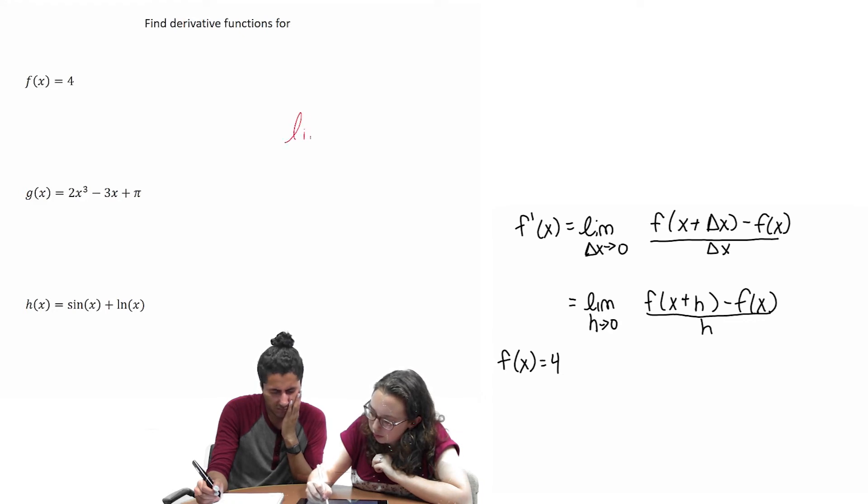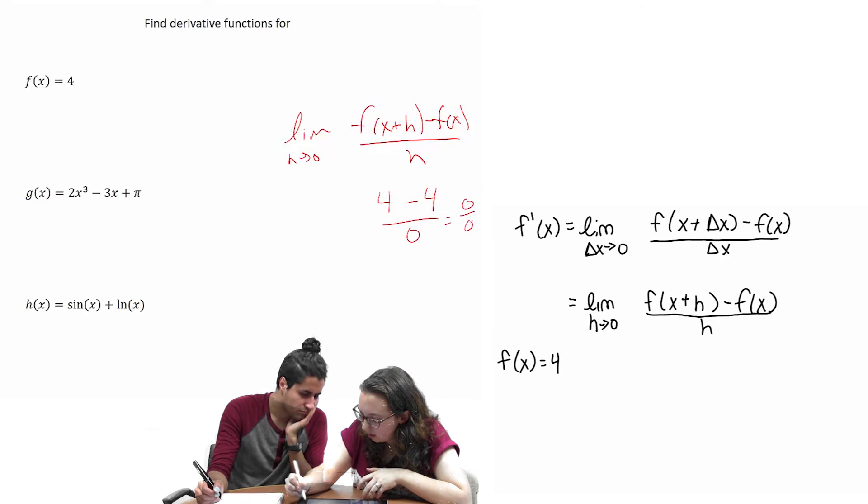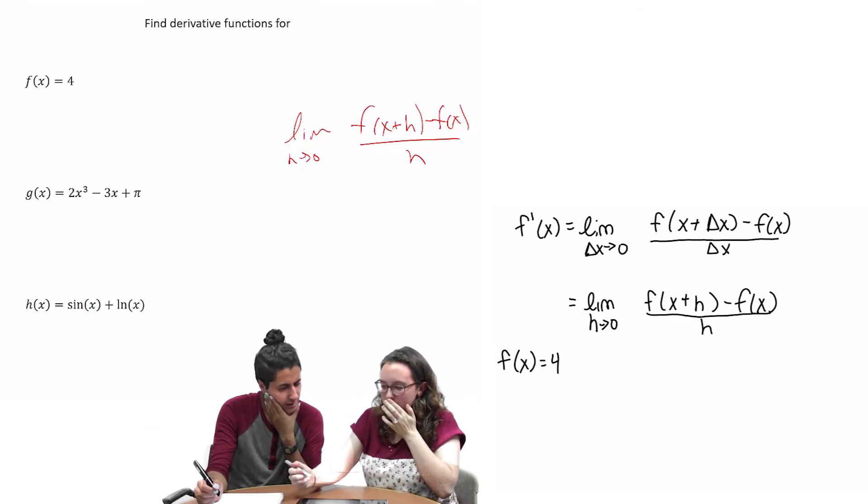So, if we do limit h versus 0... If we acted as if h is going towards 0, we'd end up getting something like that. And we can't do that. So, I don't think that's gonna work. I'm not sure how to do that one. Do you want to try the next one? Maybe come back to it?